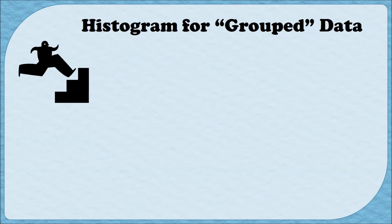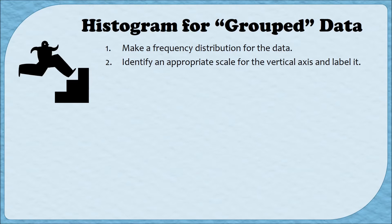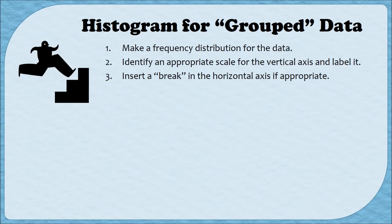The first three steps for making a histogram for grouped data are exactly the same as for ungrouped data. Step one: make sure we have a frequency distribution. Step two: determine an appropriate scale for the vertical axis and label it accordingly. Step three: determine whether or not a break is appropriate in the horizontal axis. Remember, we need a break if our first value for the horizontal axis is nowhere near zero.